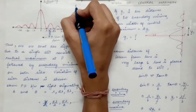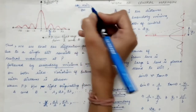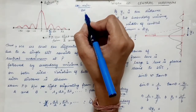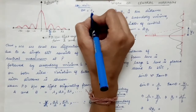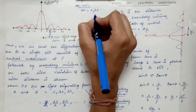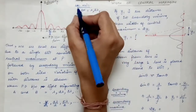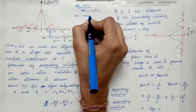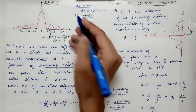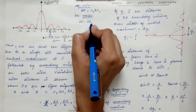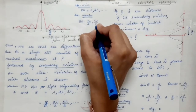The condition for secondary minimum is that the path difference BN between the two light rays originating from points A and B of the slit must equal lambda for the first secondary minimum, two lambda for the second, three lambda, four lambda, and so on. For secondary maximum, the path difference BN should be equal to three lambda by two for the first secondary maximum, then five lambda by two for the second secondary maximum, and so on.